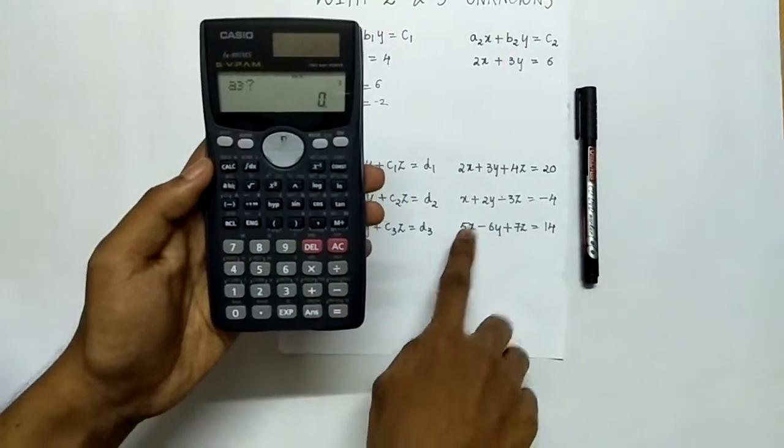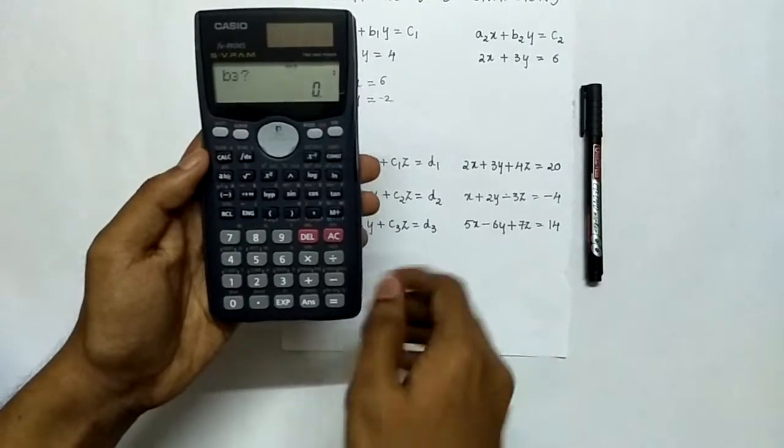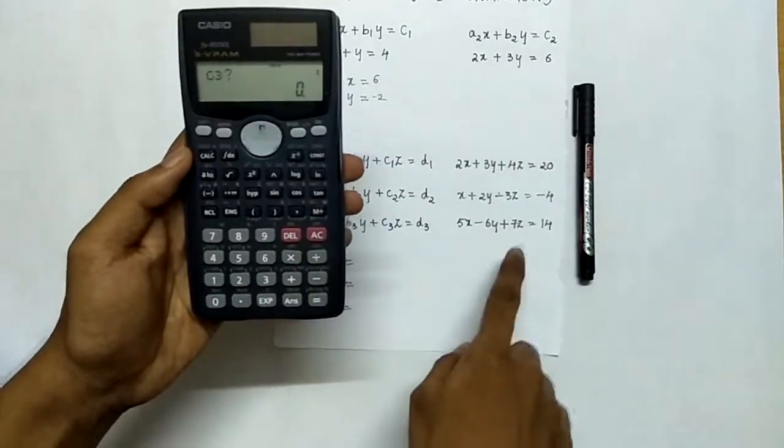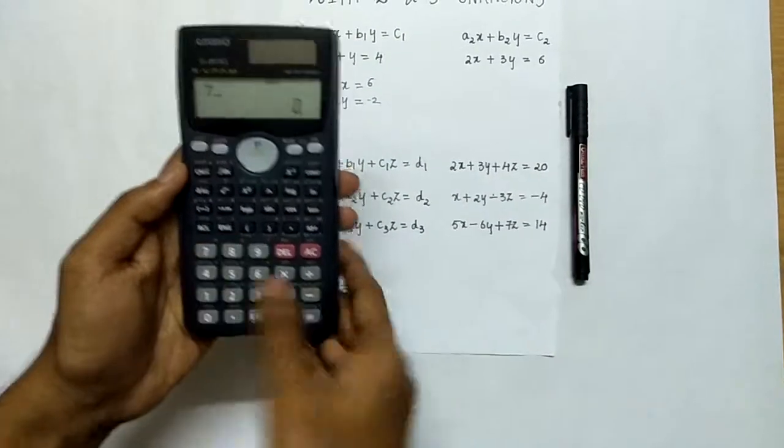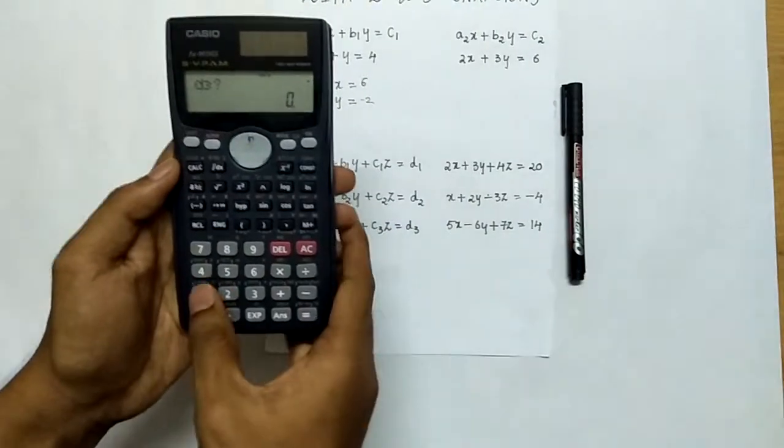a3 is 5, b3 is minus 6, c3 is 7, d3 is 14.